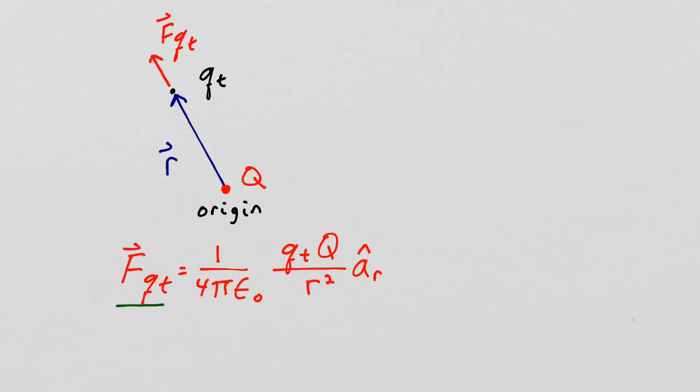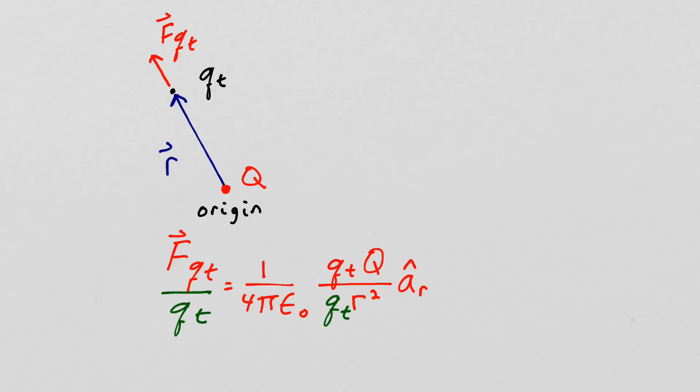Now let's take Coulomb's law and divide both sides by q sub t. On the right hand side the q sub t's will cancel and let's rename the force on q sub t divided by the charge q sub t as E.